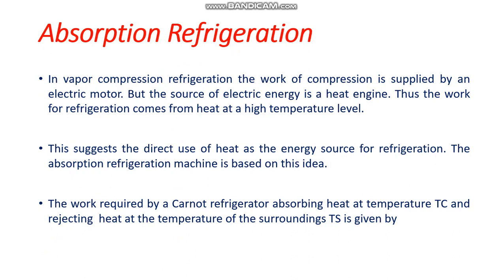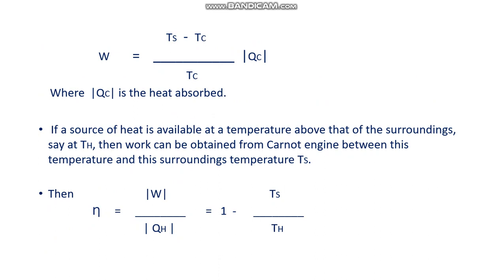The work required by a Carnot refrigerator absorbing heat at temperature Tc and rejecting heat at the temperature of the surroundings Ts is: w = [(Ts − Tc) / Tc] × qc, where qc is the heat absorbed. If a source of heat is available at temperature Th above that of the surroundings Ts, then work can be obtained from a Carnot engine between Th and Ts. The efficiency is given by w / qh = 1 − (Ts / Th).